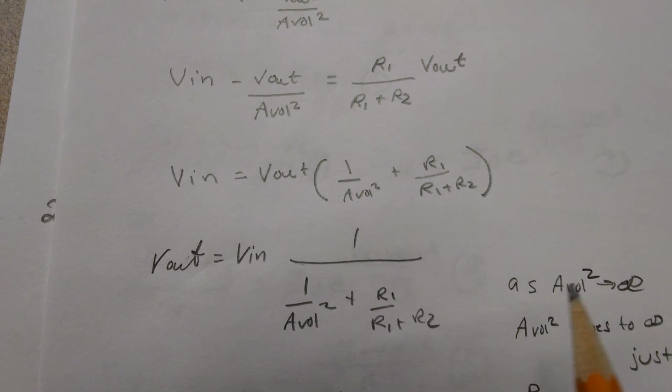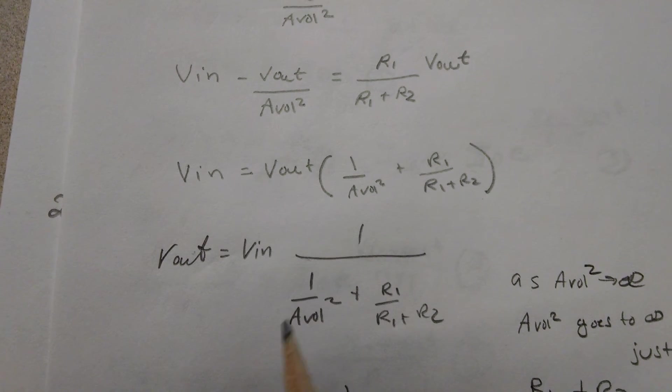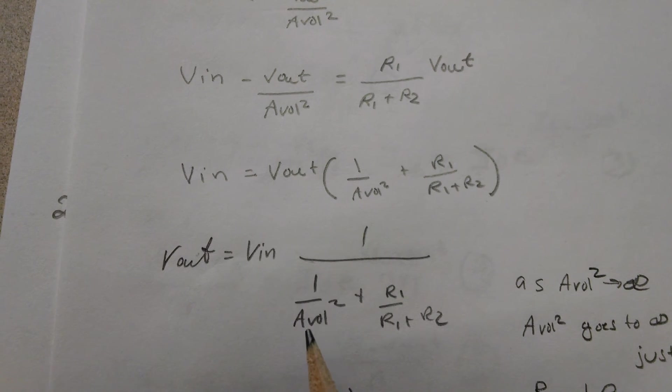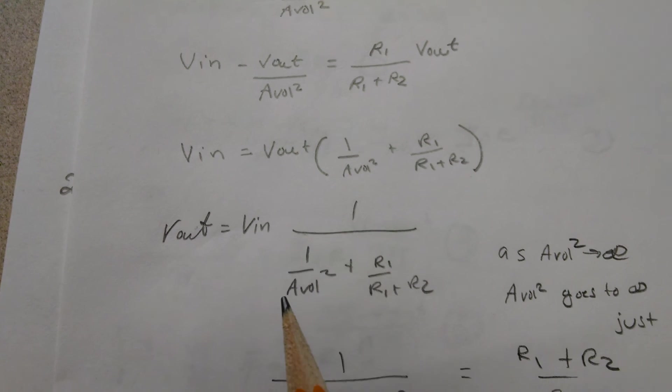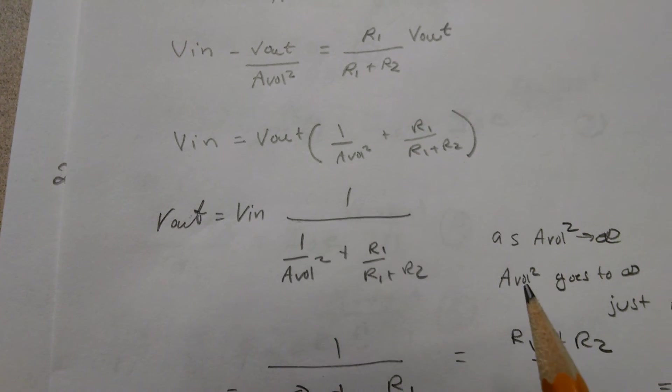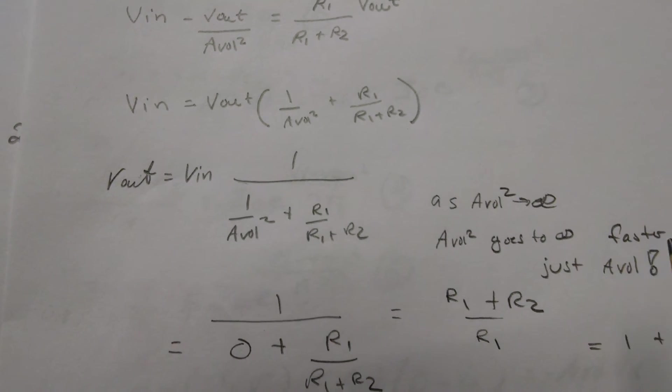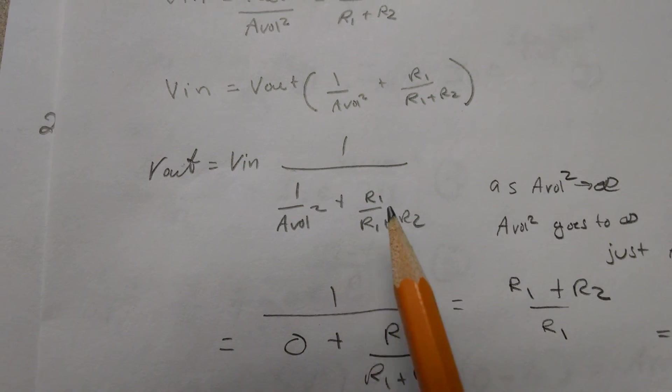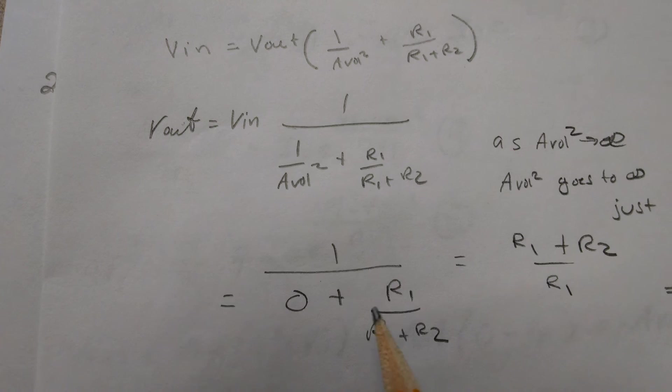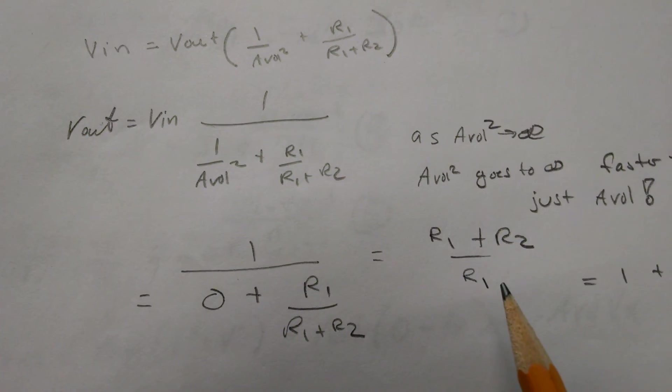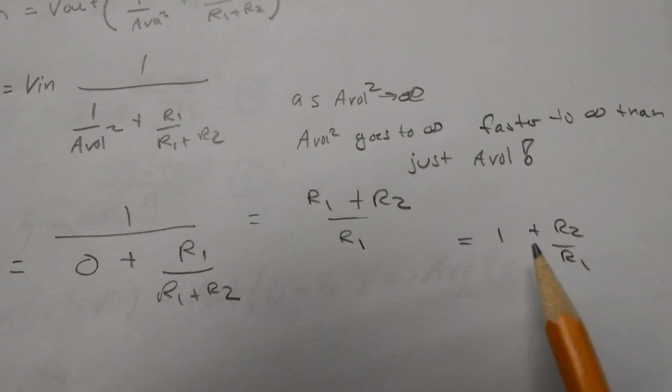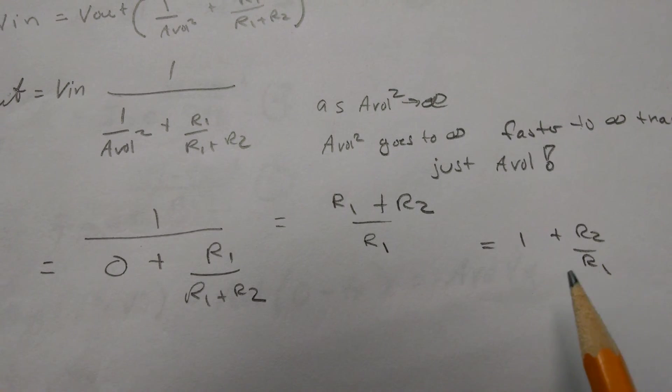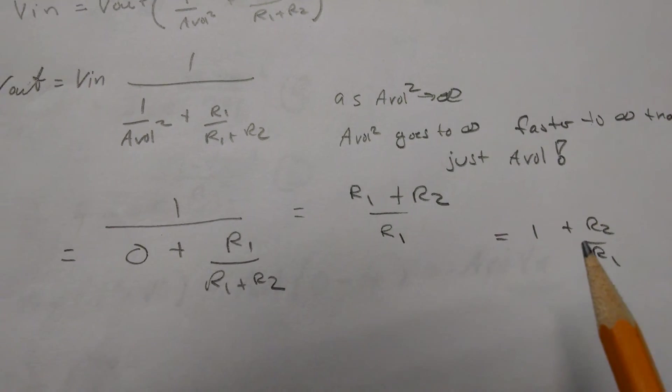We get Vout over Vin equals Vout one over the open-loop gain squared. And we let open-loop gain squared go to infinity. Well, that's of course going to drop out. And you might say, why do that? Here's the thing: open-loop gain squared goes to infinity faster than just regular open-loop gain. So when that goes to zero, we get this equation. We can manipulate it to where we get the classic non-inverting stage.